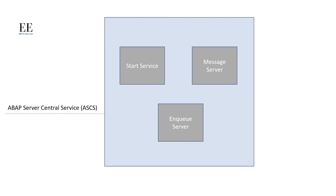Now let us take a look at the components of SAP ABAP Server Central Services. The ASCS consists of a separate start service, a message server, and an NQ server. The start service within the ASCS interacts with the start service located in the application server in order to keep track of the status of the application server within the SAP system. For example, if an SAP system has three application servers, each application server when started logs onto the ASCS first to advise its runtime state, so that the ASCS knows how many application servers are on and how many are off.